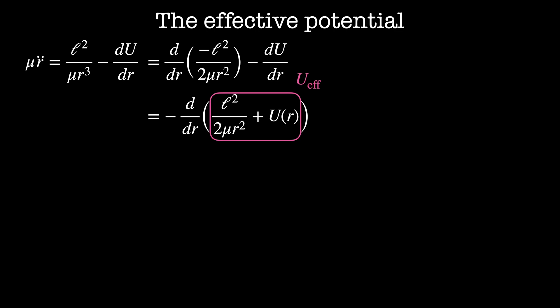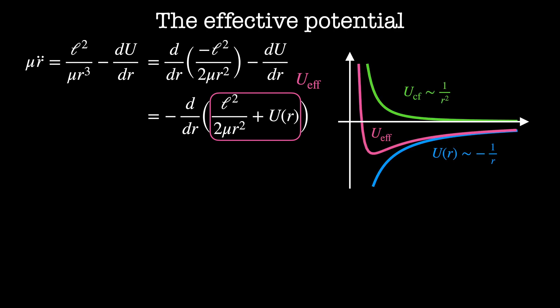What does this potential look like? Forces like gravitation or the Coulomb force have potentials that go like minus 1 over r, and our centrifugal potential goes like 1 over r squared. When we add these together we get an effective potential that looks like this. This is great news because we have a minimum in our potential that causes lots of interesting behavior that we'll see in the next video.